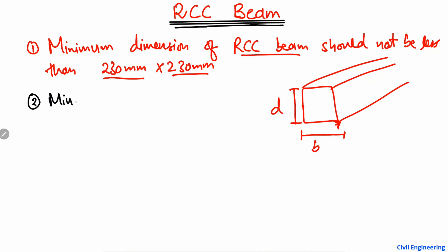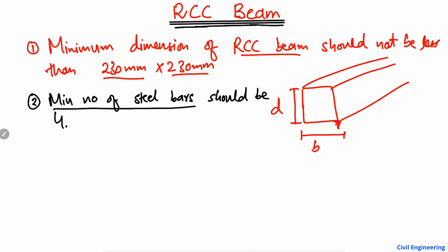The second point states that the minimum number of steel reinforcement bars should be 4. In a beam cross-section, you provide one bar at each corner — so one here, one here, one here, and one here — giving four bars minimum. Two are the main bars at the top and two at the bottom.